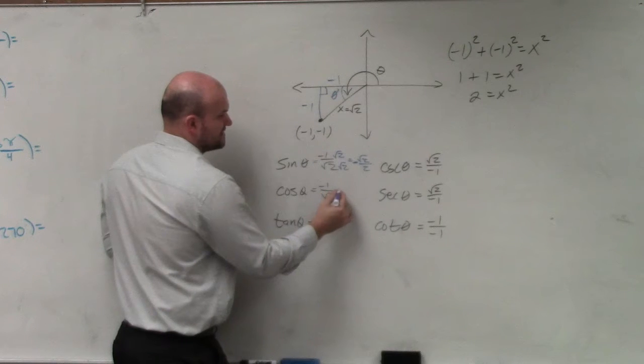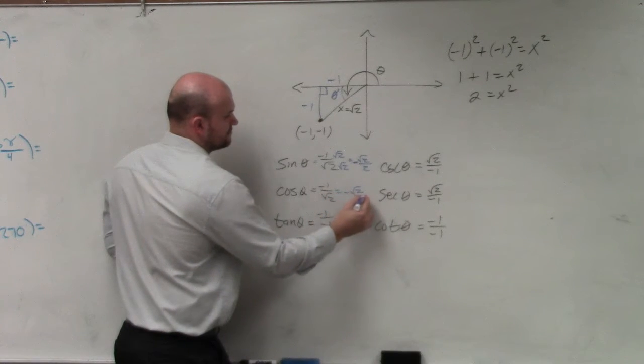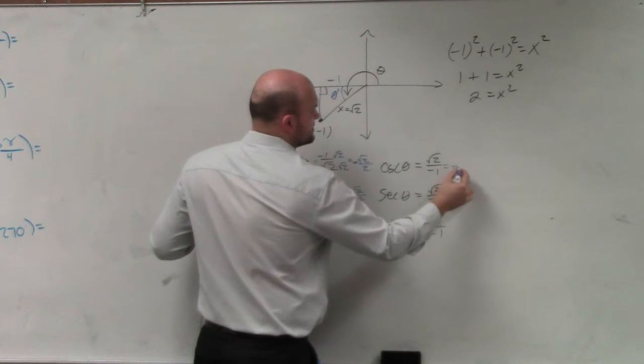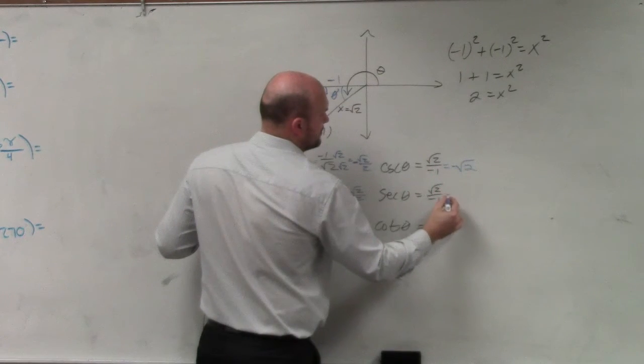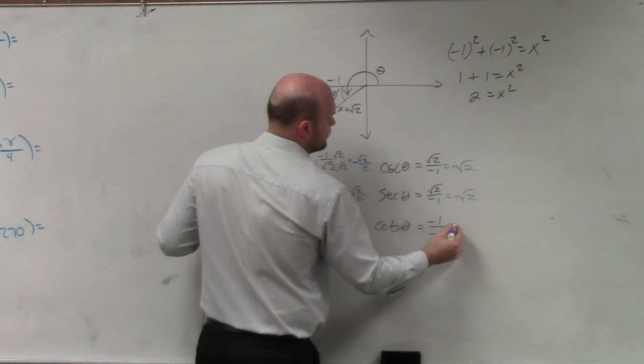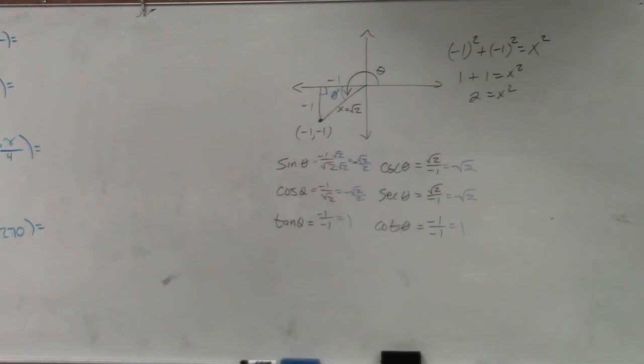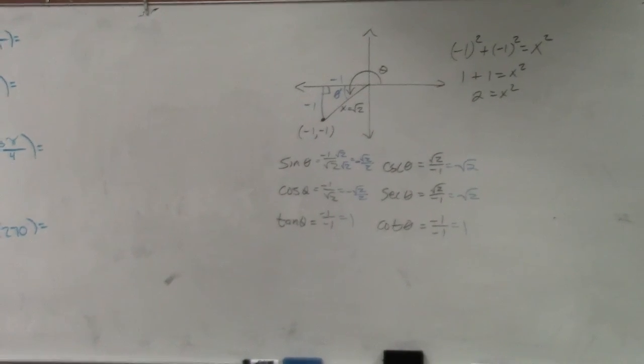Here, this is going to be the exact same thing. That goes to positive 1. This, we can just write as the negative square root of 2, negative square root of 2, and positive 1. OK, so please be careful. One of the tricks that a lot of you guys have